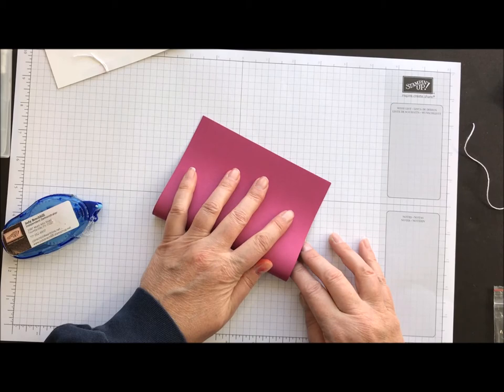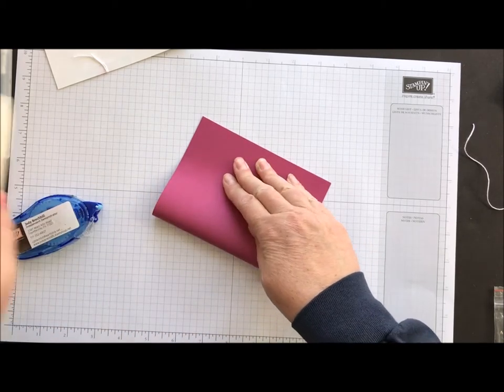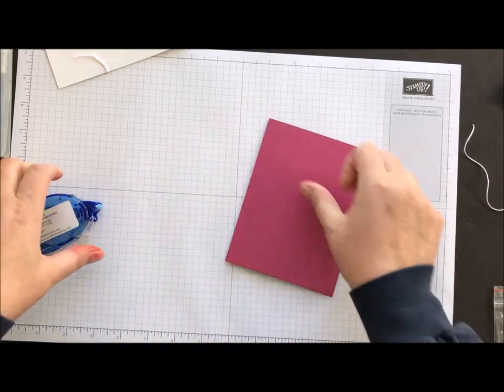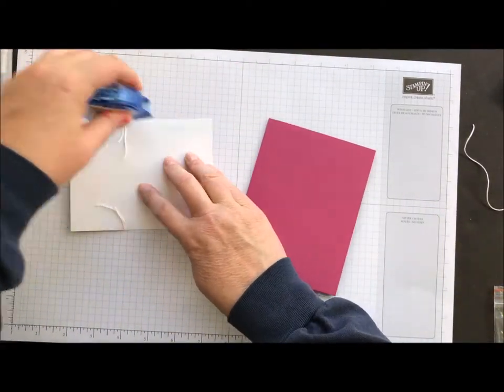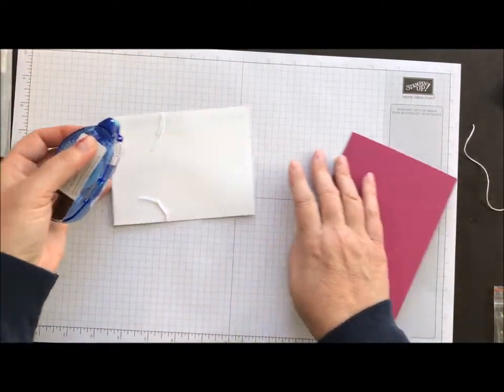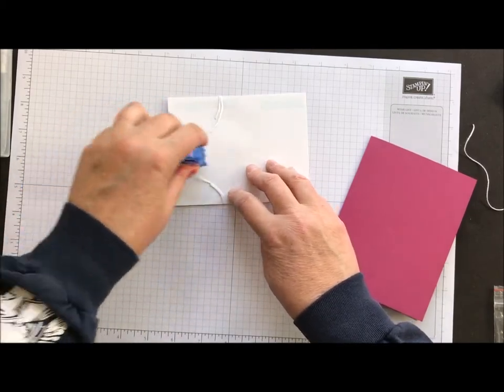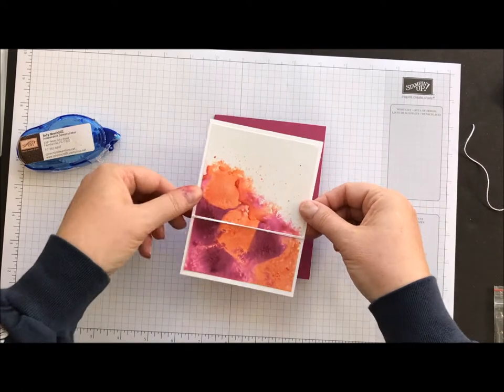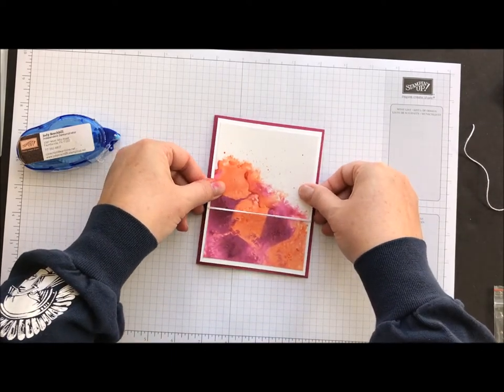And then I'm going to take a piece of Berry Burst cardstock as my base. Fold that in half. And then we're going to attach our card to that base. I always like to put a little bit of adhesive on those ties that are around the back so they don't come popping off on me.